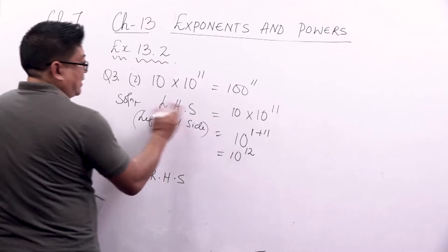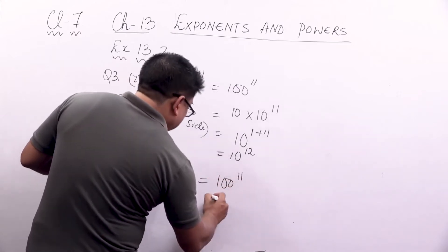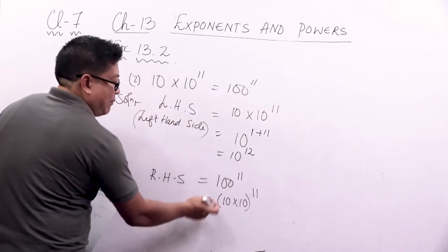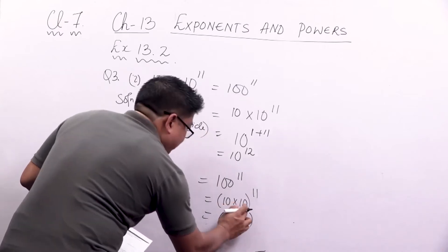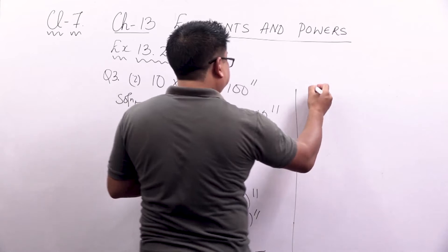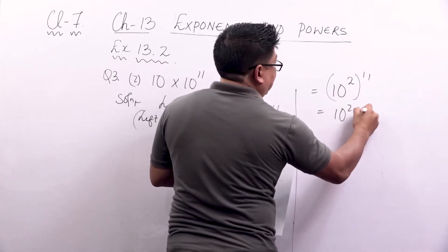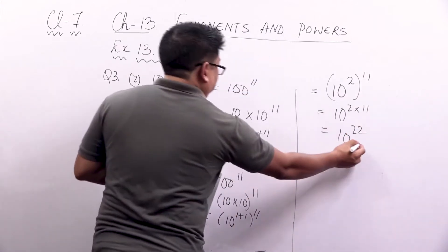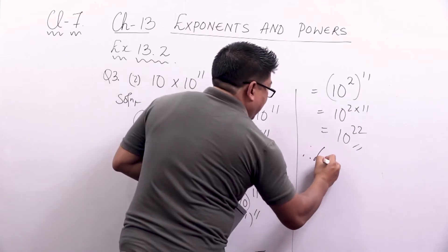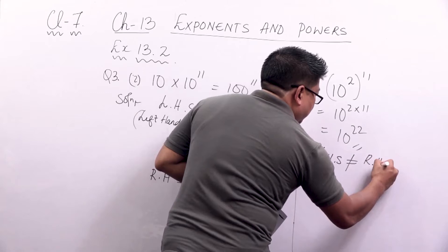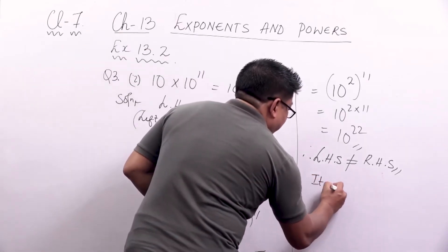Now for RHS — right hand side — we have 100 to the power 11. I can write 100 as 10 into 10, which is 10 to the power 1 plus 1, same base, so 10 to the power 2. Then power of powers means multiply: 10 to the power 2 times 11 gives 10 to the power 22. So LHS is 10 to the power 12 and RHS is 10 to the power 22. Therefore LHS is not equal to RHS, so this is false.